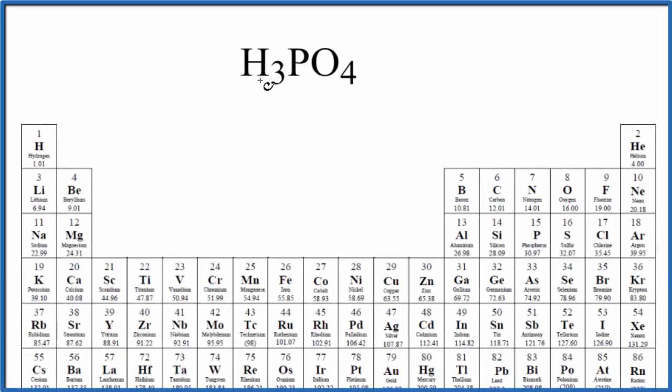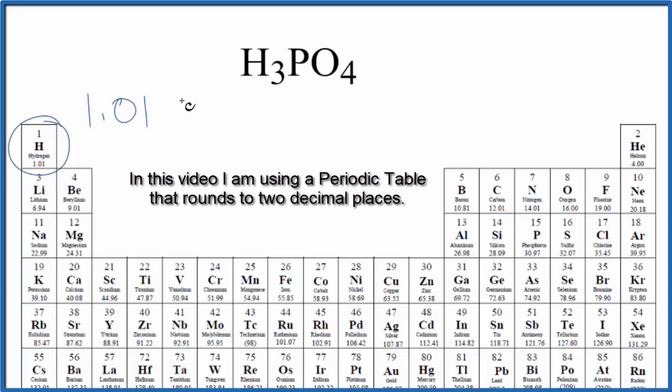In this video, we'll find the molar mass for H3PO4. This is phosphoric acid. On the periodic table, hydrogen has a molar mass of 1.01 grams per mole. I won't write grams per mole each time. Let's do that at the end. There are three hydrogen atoms, so we need to multiply that by three.